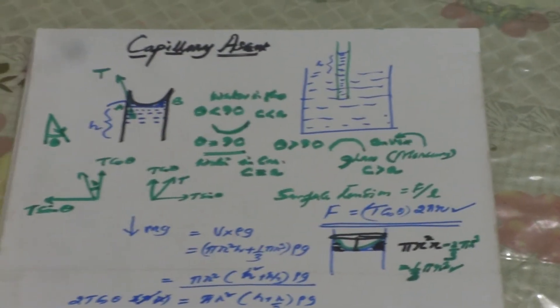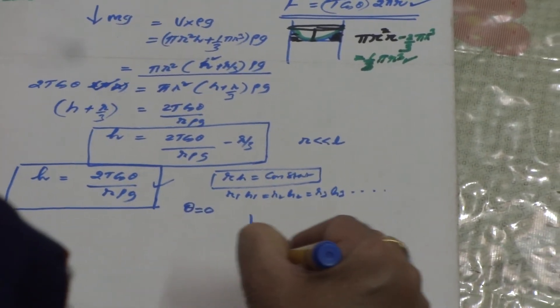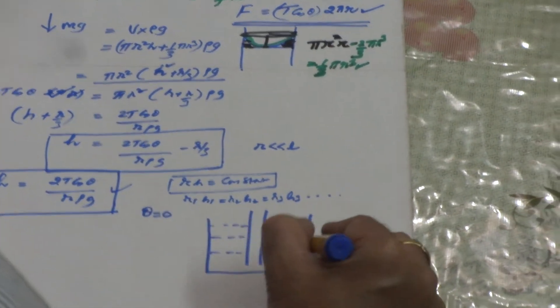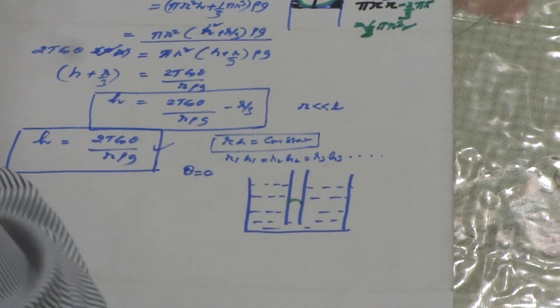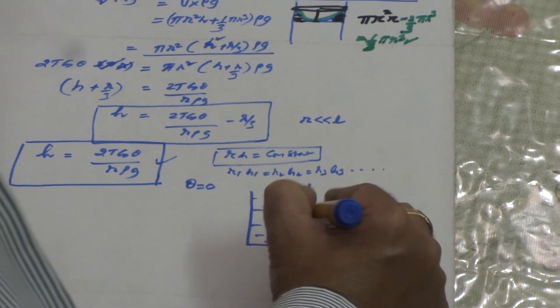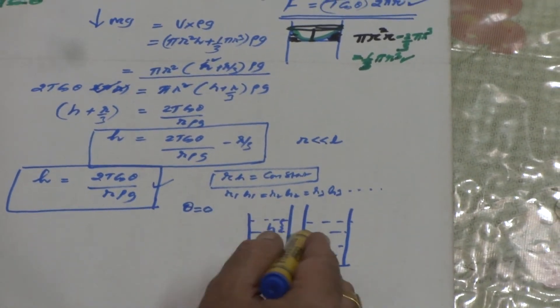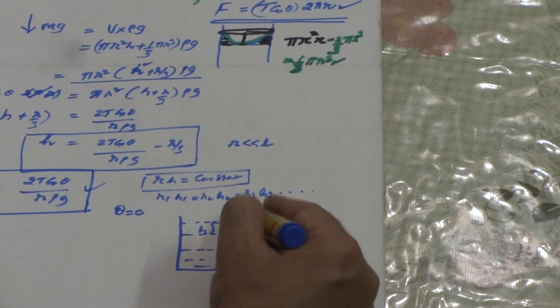In the case of mercury, the formula is still h = 2T cos theta / (rρg), but it is capillary descent. If you draw the figure for mercury, the inside liquid level will be lower than the outside liquid in the container. The height inside the tube is less than the height in the container — this is called capillary descent, as opposed to capillary ascent.